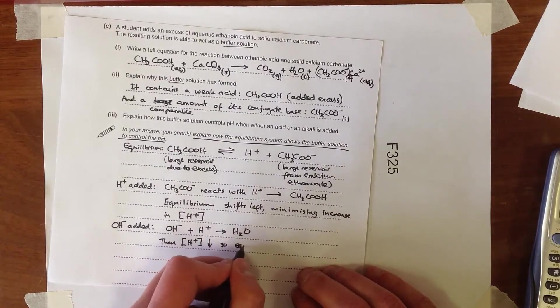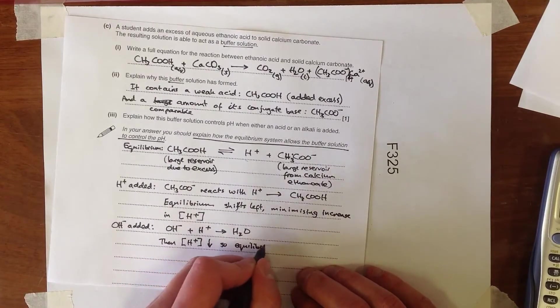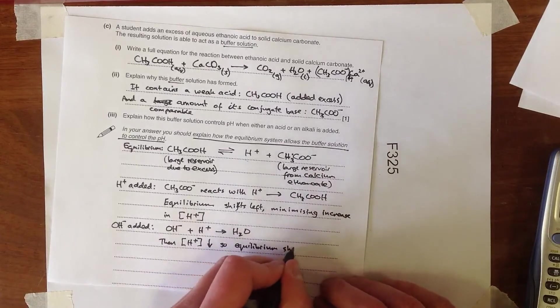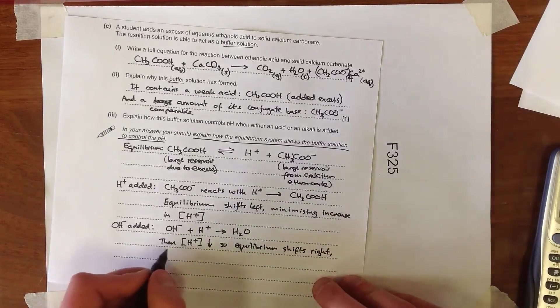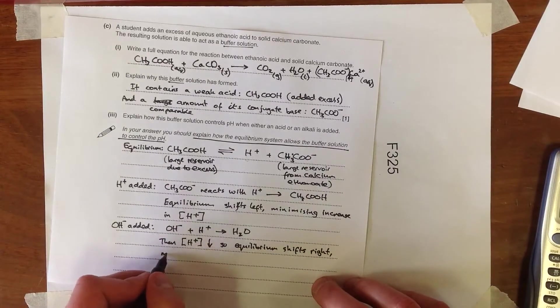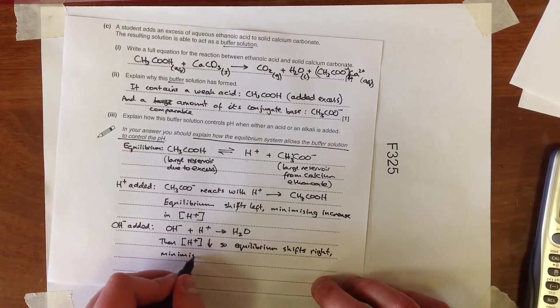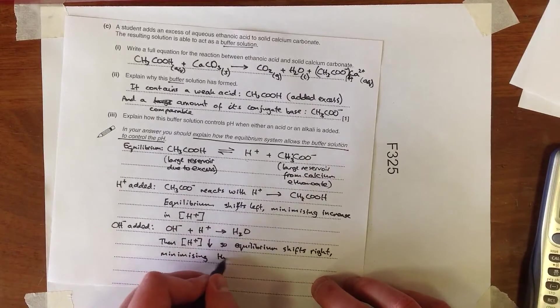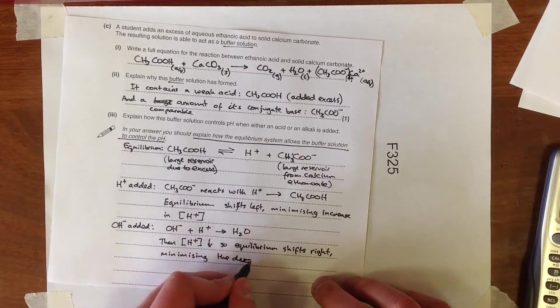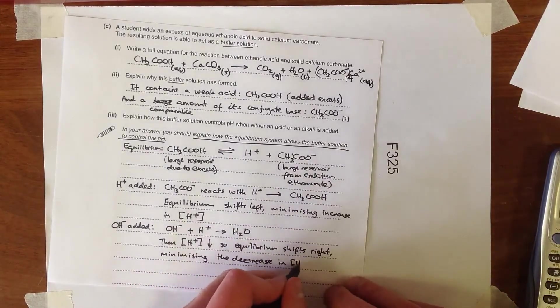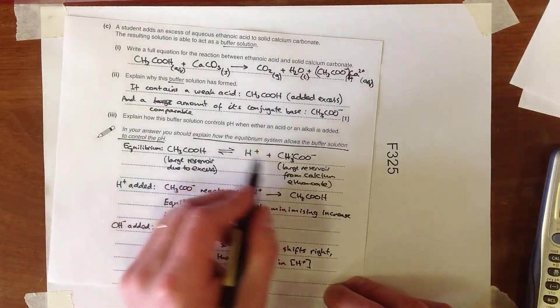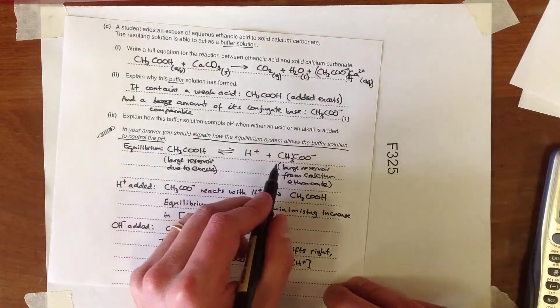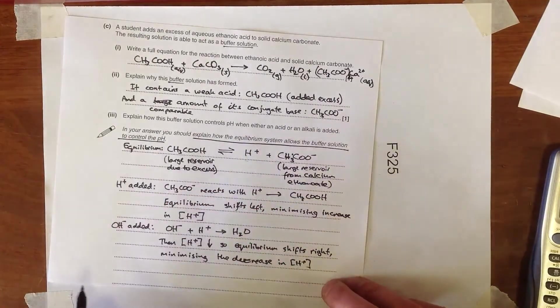Then as the concentration of H+ goes down, so equilibrium shifts to the right, minimising the decrease in the concentration of H+. So this gets removed by reaction with the alkali. The equilibrium system responds by shifting to the right to replenish these supplies.